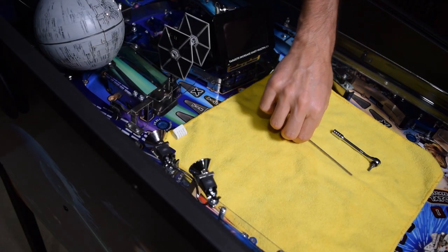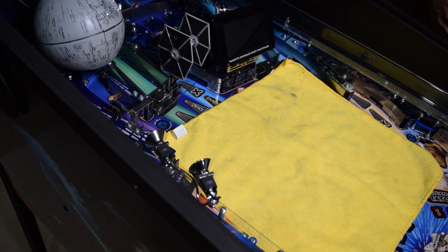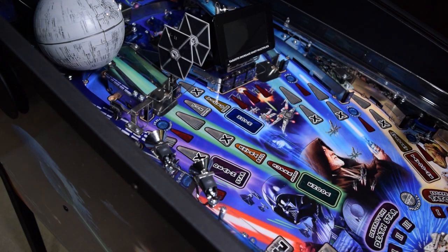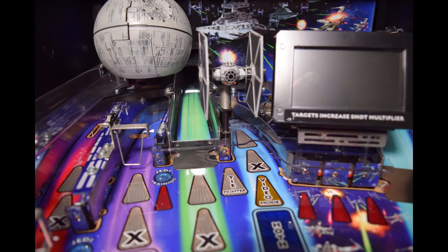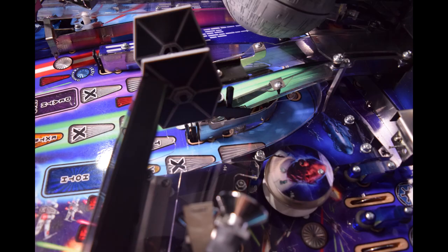With the installation complete, remove the towel from the playfield and any tools that you used. Here are two pictures of how the air ball protector should look when it is properly installed on Star Wars Pro.